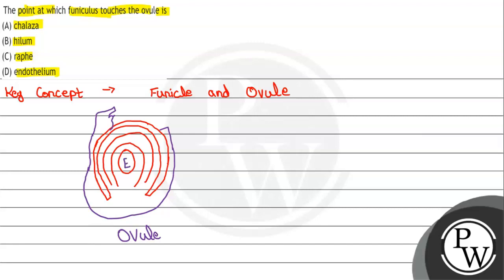Above the embryo there are integuments, then the nucellus. The nucellus basically has two ends: the chalazal end and the micropylar end. These are the two ends. To attach the ovule, the funicle is used. This is our funicle.